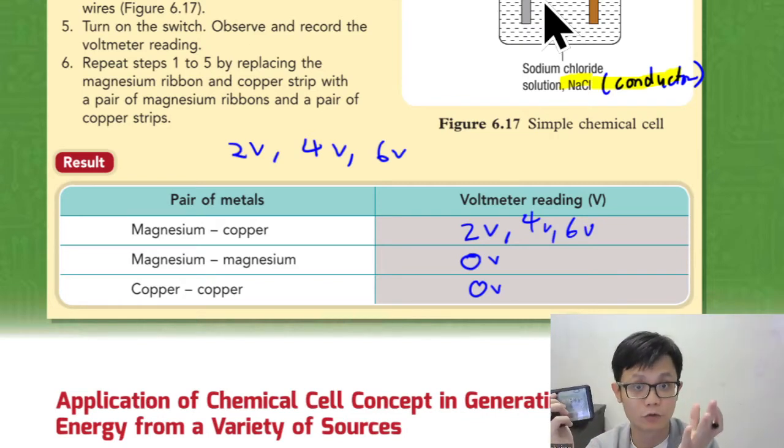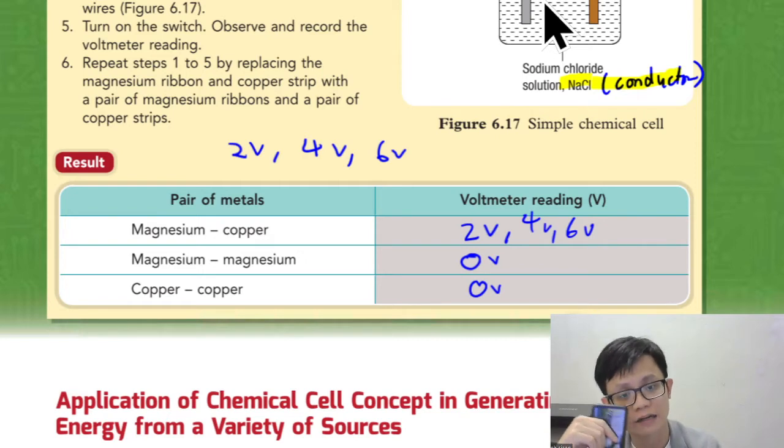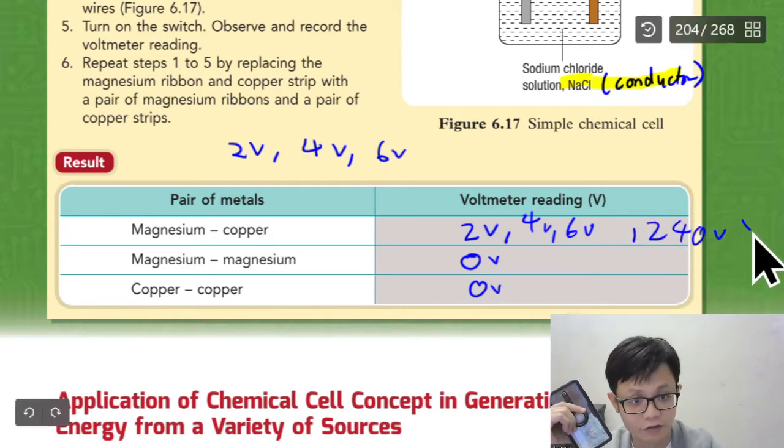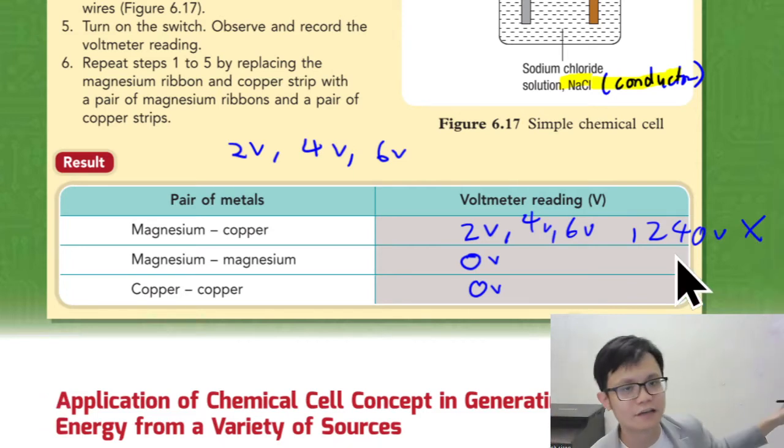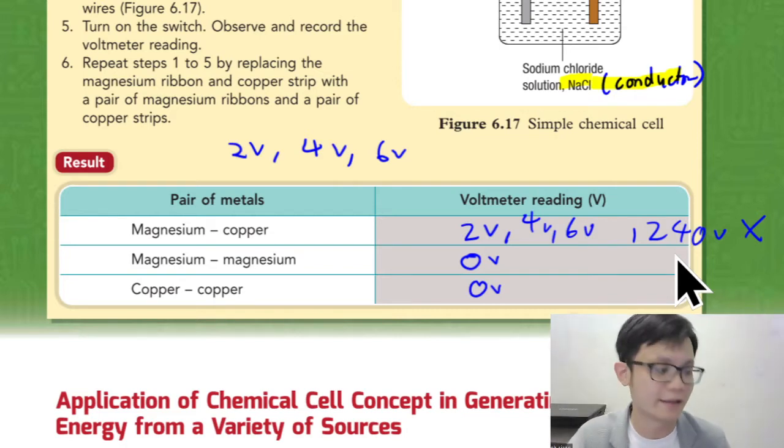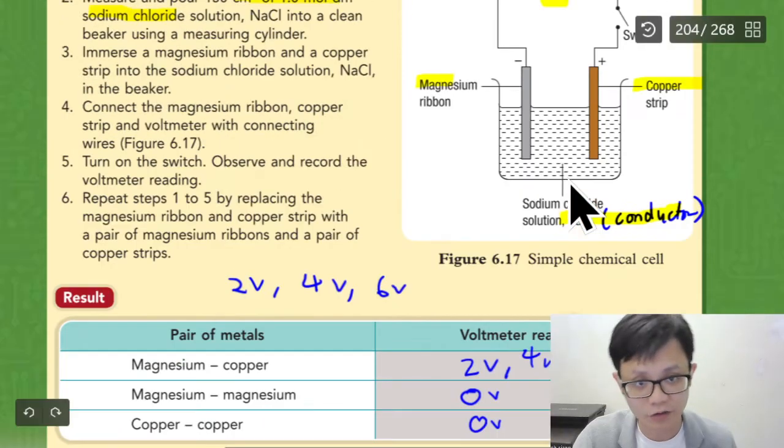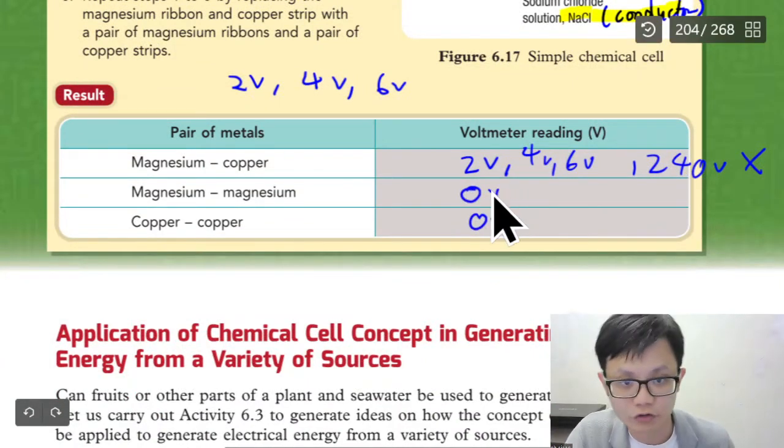It should be around 5 volt should be enough. We don't want to put too many volt. If you put 240 volt, then the teacher will give you wrong. Because 240 volt is your switch. Your house switch. One switch in Malaysia is 240 volt.